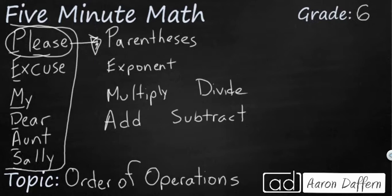After we deal with any parentheses, we go for our exponent, which is represented by excuse. Now my dear represents multiply and divide. Now when we're listing out PEMDAS, we have to put one word in front of the other, but these two are equal because they are inverse operations. So what that means is they are on the same level.